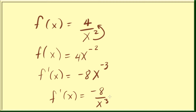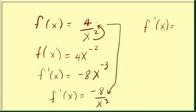From here we can see the shortcut we'll use any time we see reciprocals. From the given expression to the derivative: first, switch the sign — the original sign is positive, so the derivative is negative. Then multiply the constant in the numerator (4) by the exponent (2) to get 8, and add 1 to that exponent in the denominator, giving x cubed. As easy as that.